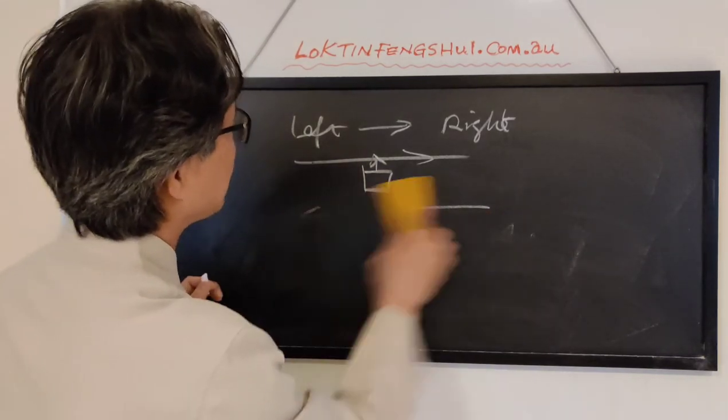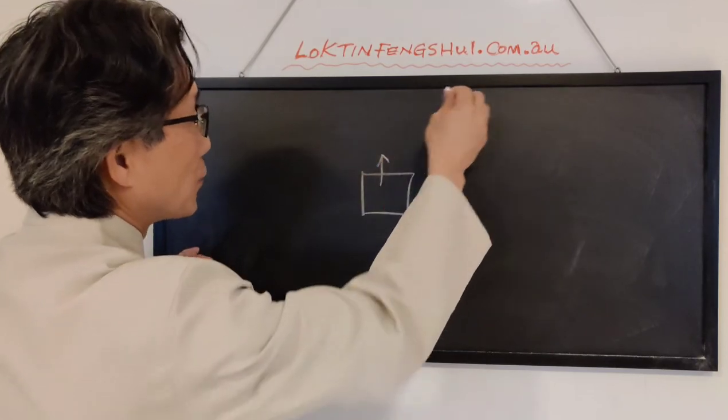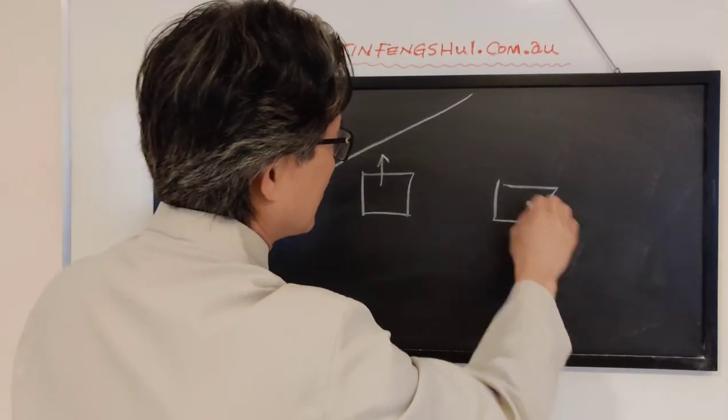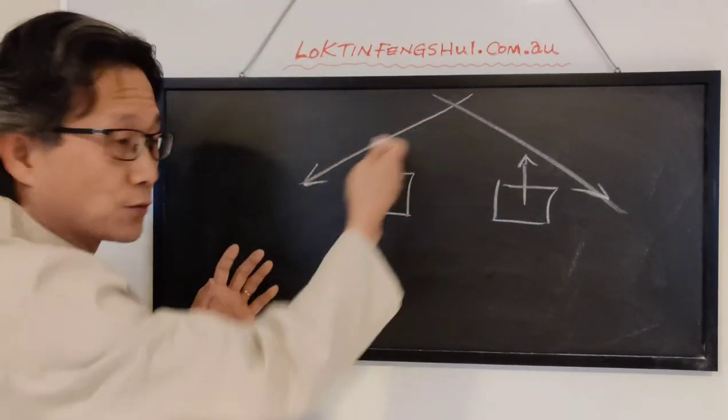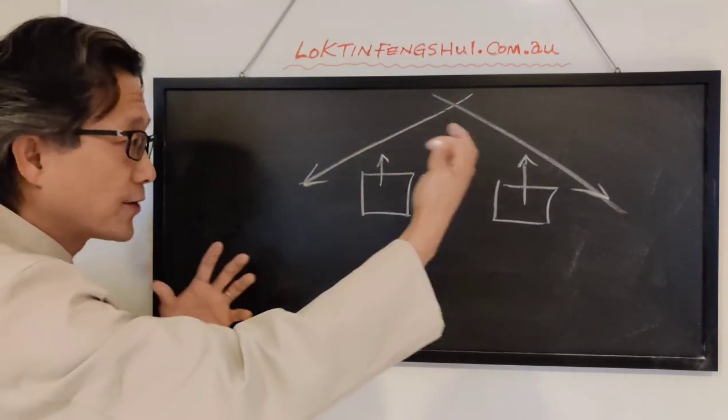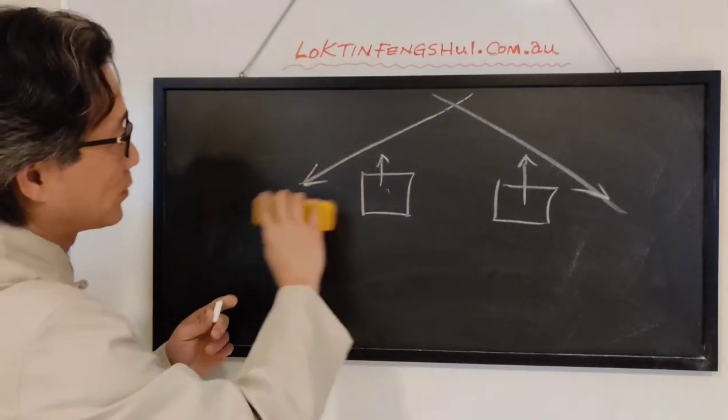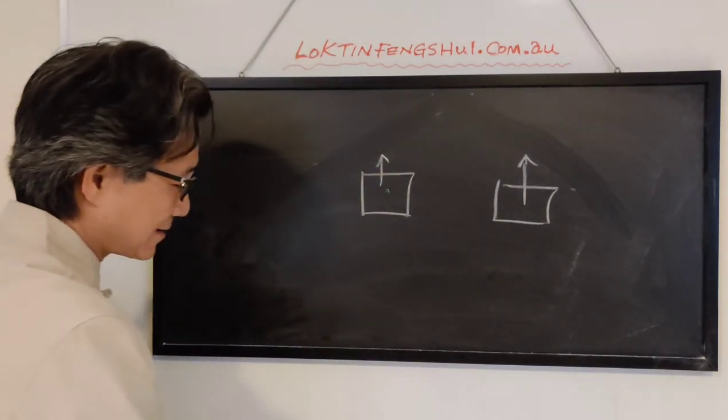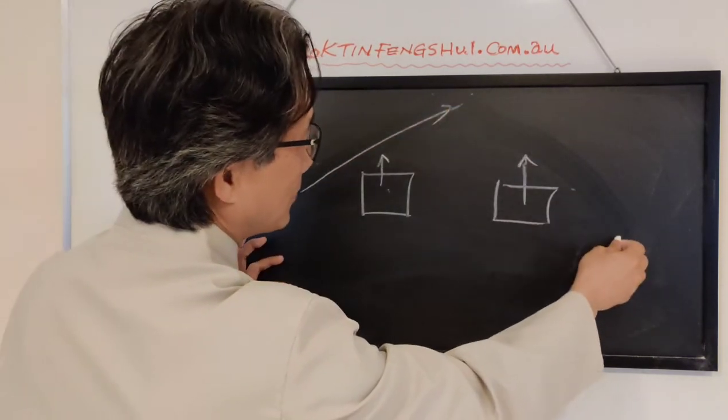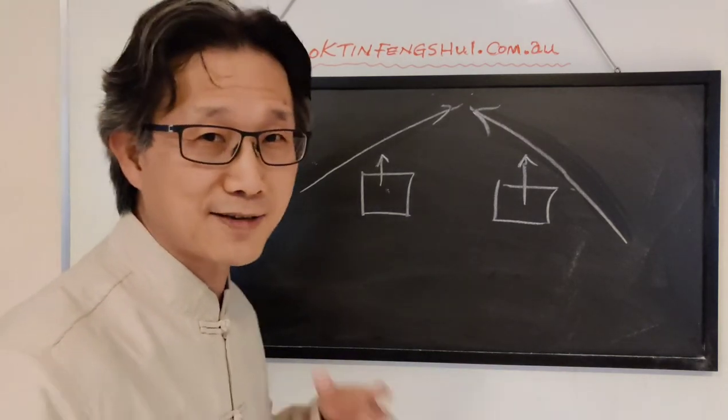The second form is when you have the house and the water moving diagonally, coming in from an angle, or moving from this way. This is also good. The water comes when that side is a bit higher, flowing to the house, toward the house. That's very good. Then there's another type where it's higher and the water flows out that way. Water flowing out, of course, is no good - like money flowing out.